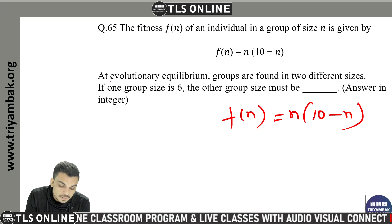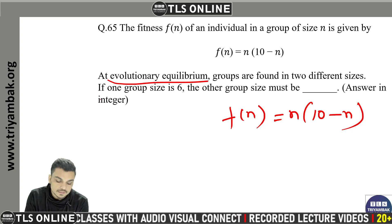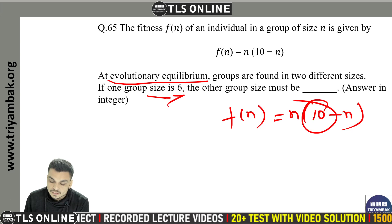Groups are found in two different sizes. If one group size is six, then by the total of 10, one in six gives the CDC value. The other group: CDC six minus that value gives the full answer.